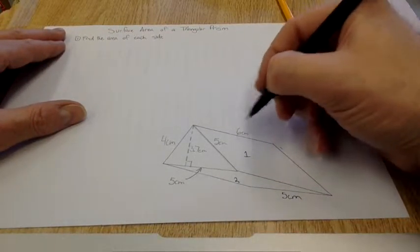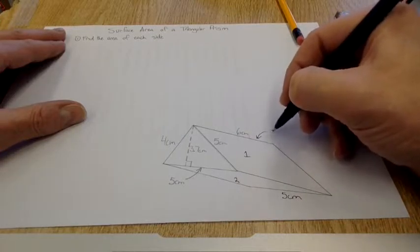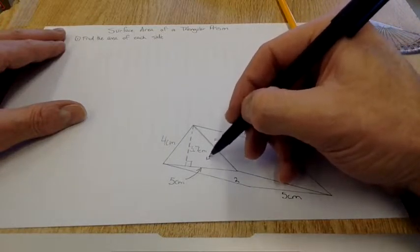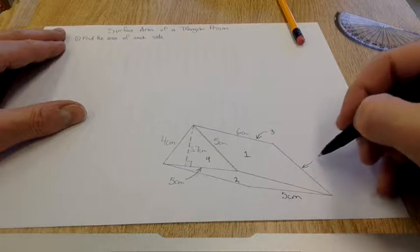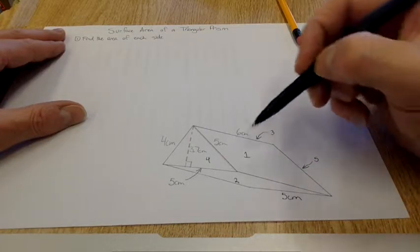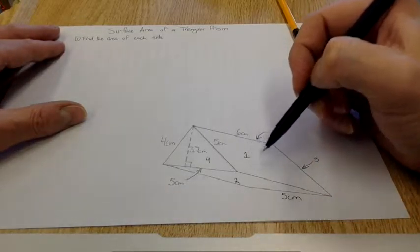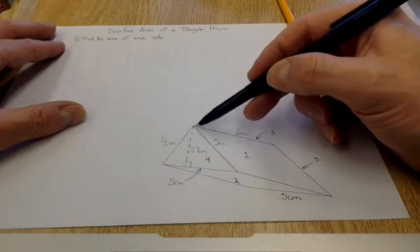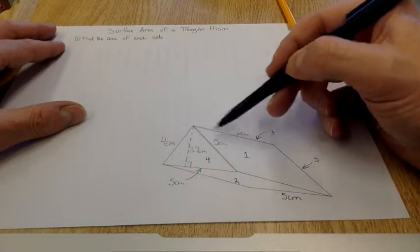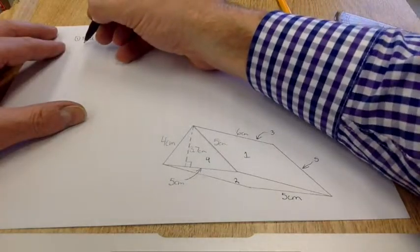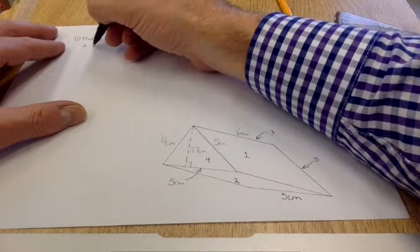This will be number one, number two, behind here is number three, and the four, and this side is number five. So side one, what I'm seeing here is I have a rectangle that's 5 centimeters by 6 centimeters.